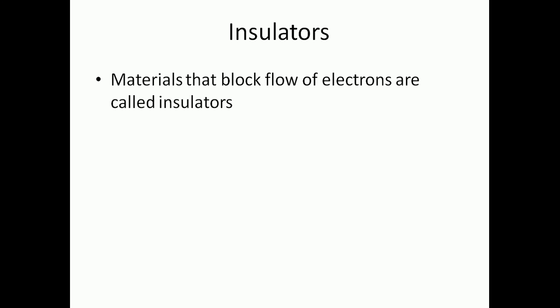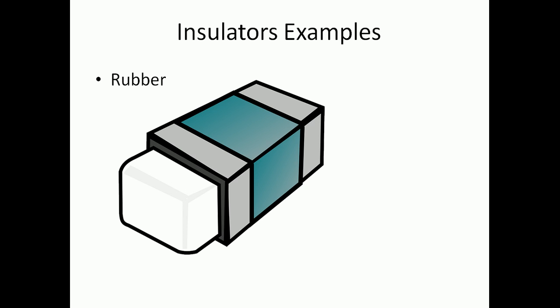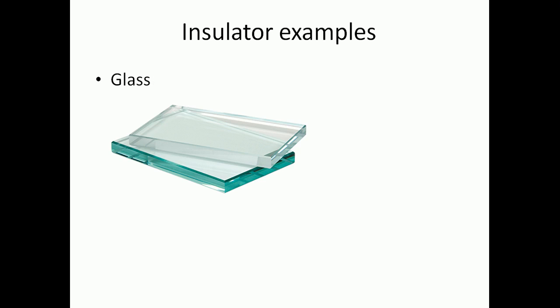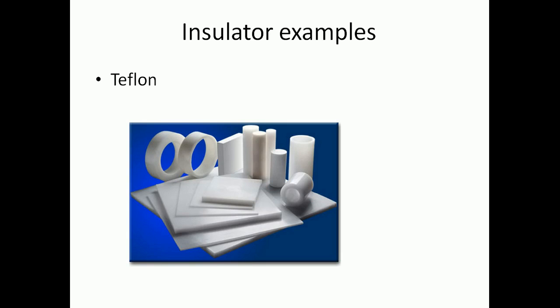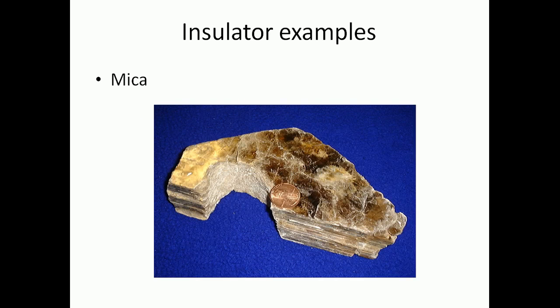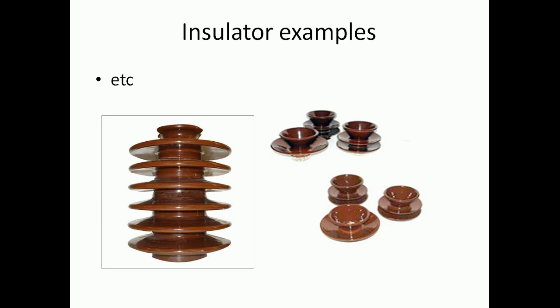Insulators. Materials that block flow of electrons are called insulators. Examples for insulators are rubber, glass, teflon, mica, etc.